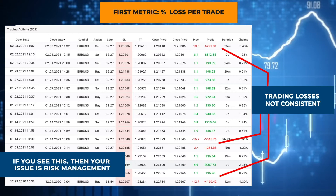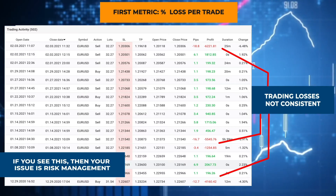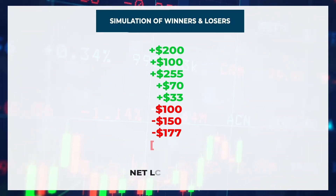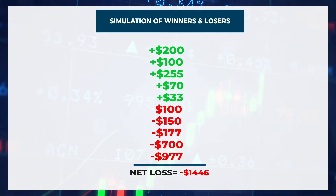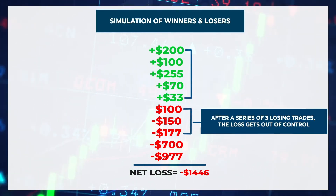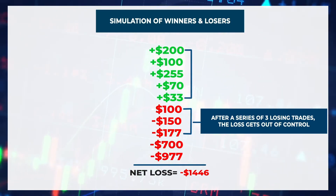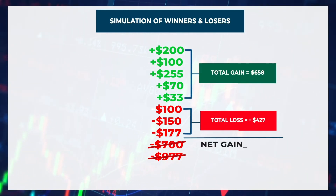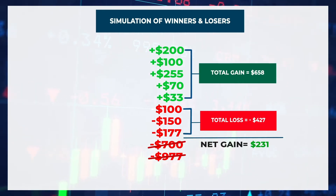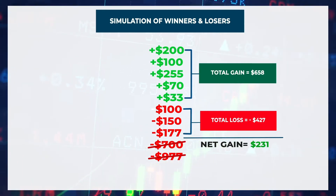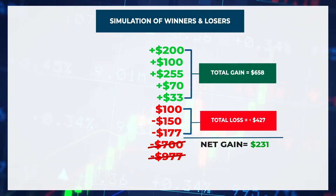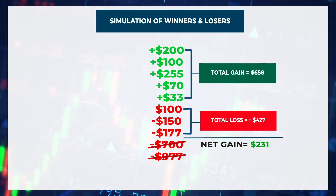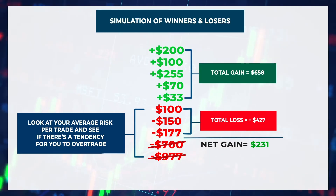If you see this, then your issue is risk management. You can also tell if your strategy is somewhat workable just by looking at your winners and losers. Here as an example, you can see that the number of winning trades is quite a lot, but after a series of three losing trades the loss gets out of control. Now if we were to remove these big losses, suddenly this trading strategy is making money.